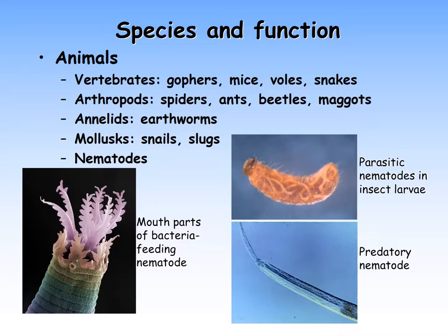Most nematodes, however, are beneficial. They feed on insects, larvae, fungi, and bacteria — all of which could be plant pathogens. Since bacteria contain more nitrogen than the nematodes can use, their feeding serves to release plant-available nitrogen into the soil. Nematode feeding may account for as much as 30 to 40 percent of the organic nitrogen released from the soil.